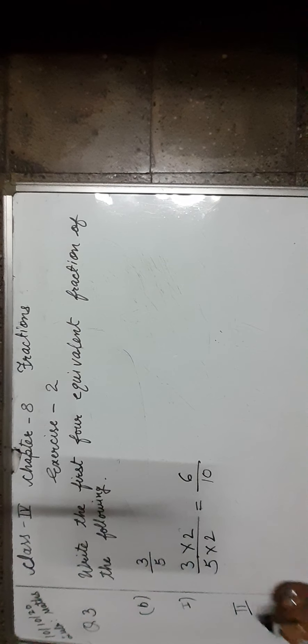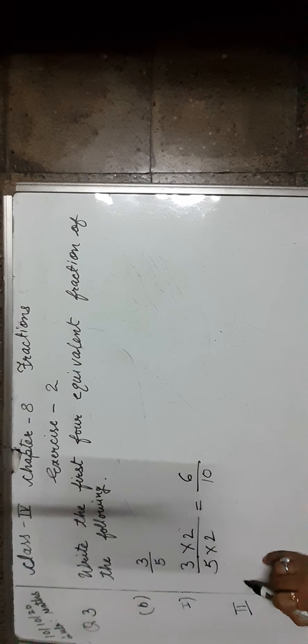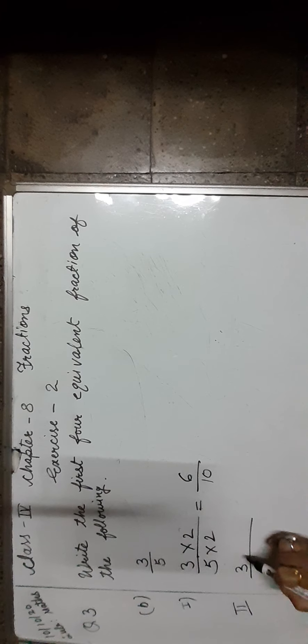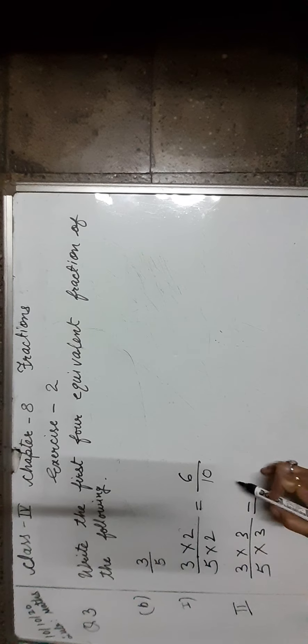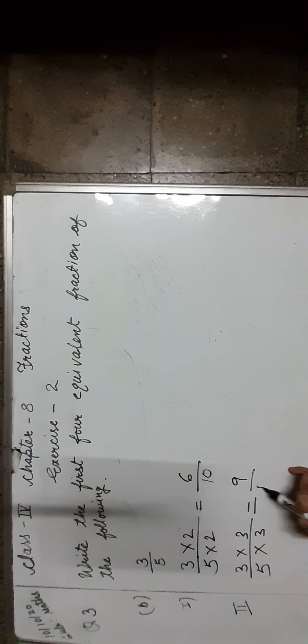Now let us find the second equivalent fraction. To find out the second equivalent fraction, we multiply both numerator and denominator by 3. 3 threes are 9, 5 threes are 15, which is equal to 9 upon 15.